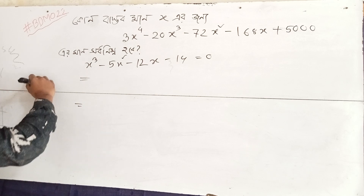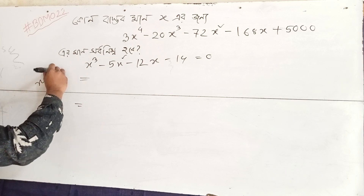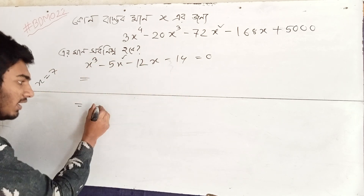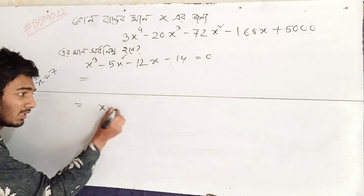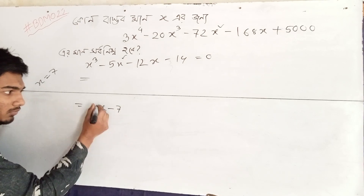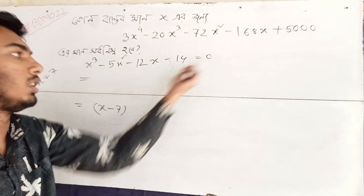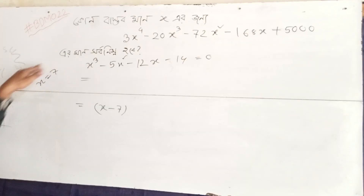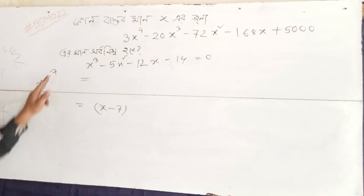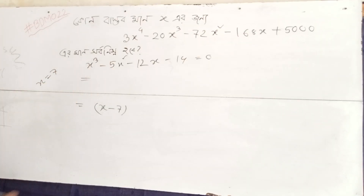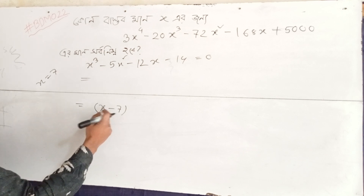We return to the equation x³ minus 5x² minus 12x minus 14 equals 0. If x equals 7, the whole function is 0. So we can say x minus 7 is a factor.